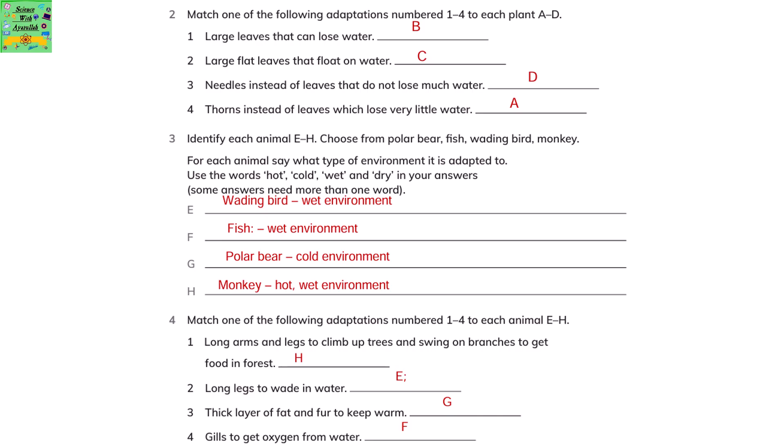Match one of the following adaptations numbered 1 to 4 to each plant A to D. Number 1 is large leaves that can lose water — those leaves are of the plant in picture B. Large flat leaves that float on water relate to the plant in picture C. Needles instead of leaves that do not lose much water is for the plant in picture D. Thorns instead of leaves which lose very little water is for the plant in picture A.